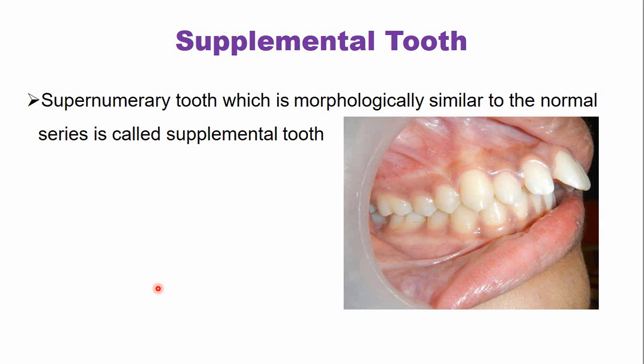In hyperdontia, the maxillary dental arch is most commonly involved. Most supernumerary teeth are seen in the maxillary arch, and most commonly they are present in the permanent dentition. It is very rare in the deciduous dentition, so additional or supernumerary teeth in the deciduous dentition occur only rarely.